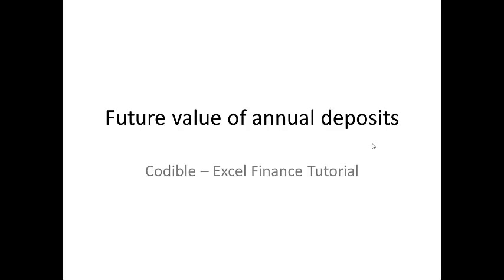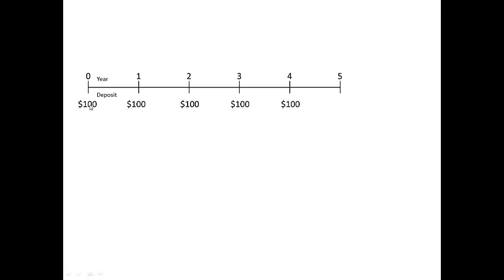In this video we'll see how to compute the future value of annual deposits. Unlike the previous case, this time we are not having just one single deposit but five different deposits, each happening at the start of each of five years. Year zero refers to today, year one refers to one year from now, and so on. A hundred dollars is the amount received today and one, two, three, and four years from now. Our goal is to compute the future value of all these cash flows at the end of the fifth year.